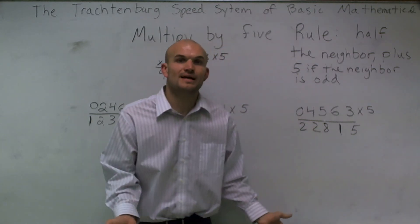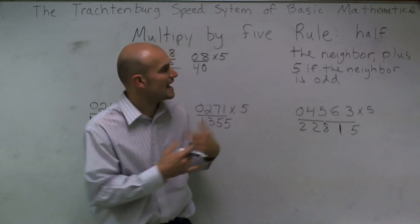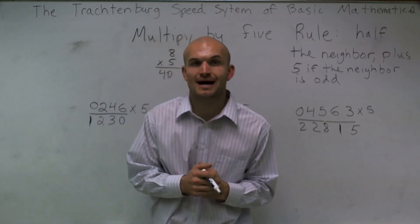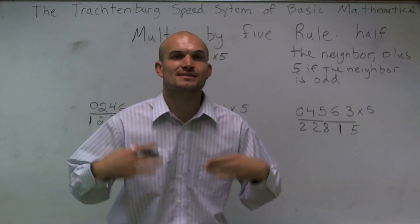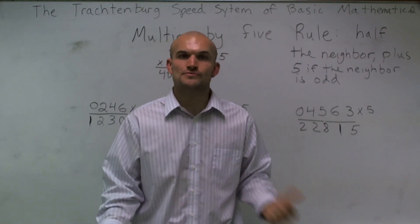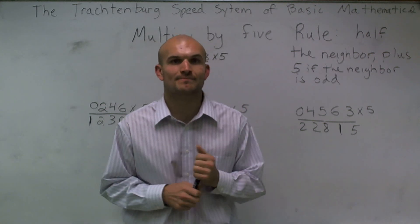So very simply, guys, there is our rule for multiplying by 5. Just remember to half the neighbor and then add 5 if the neighbor is odd. So that's really your rule. Just make sure, guys, you practice over and over and over again. And that's really the only way that you're going to get really good and really quick with this method. All right. Thanks again.